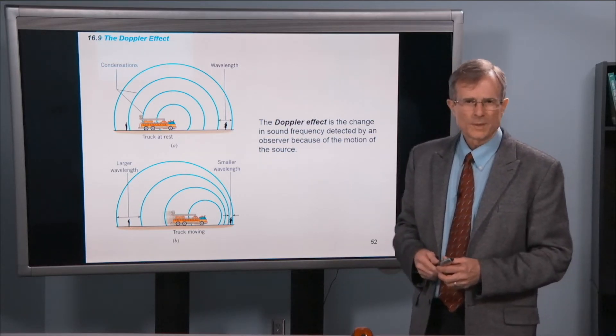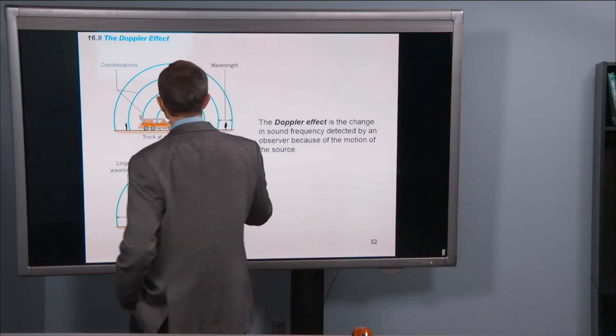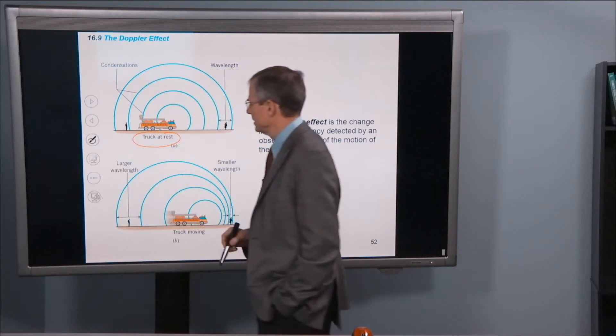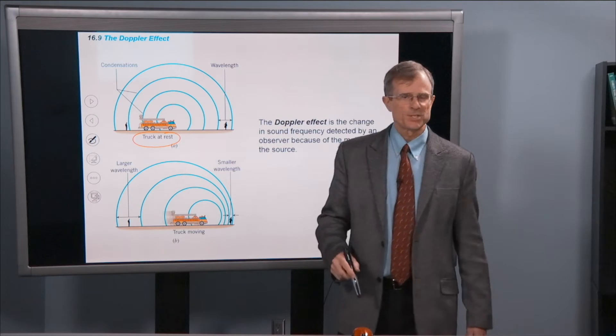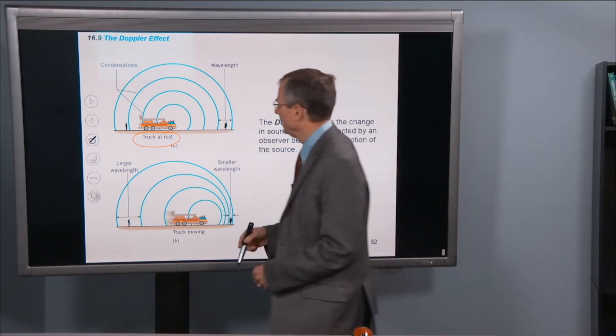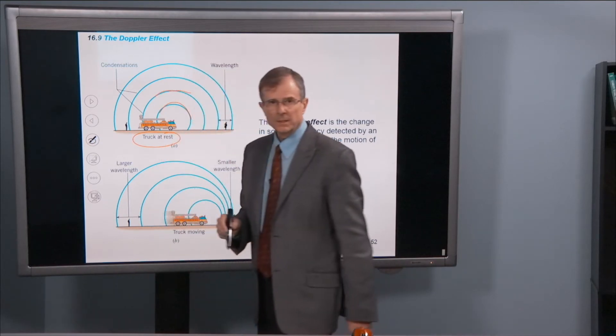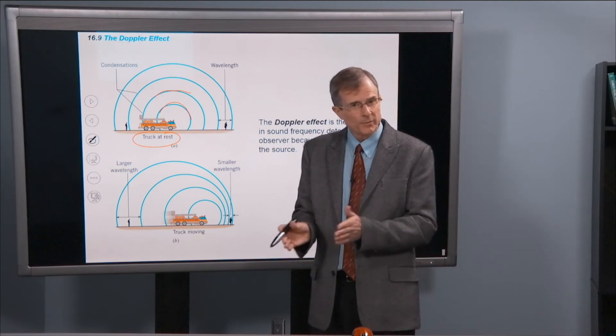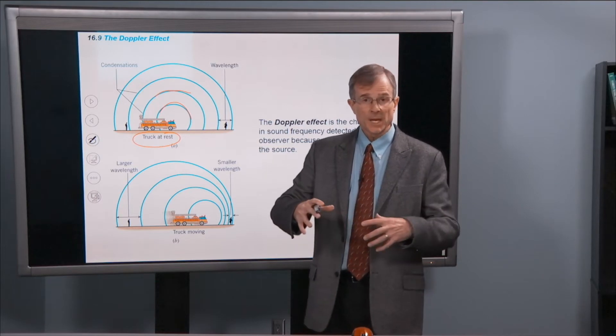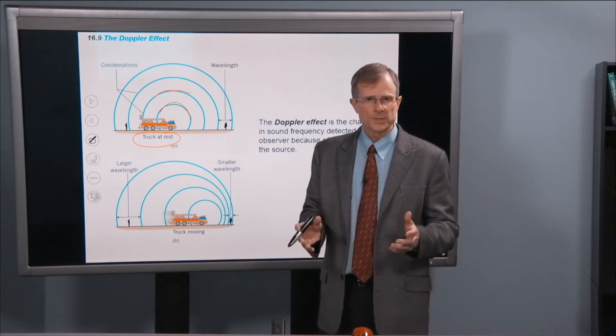If you have a truck that's approaching you, well this is a stationary truck at rest, sounding its siren or clanging a bell in some periodic way. Each of these blue circles represents a wave crest or a condensation in the wave where the pressure is high. That's propagating outward and those condensations are concentric. They all have the same center because they're all originating from the same place.